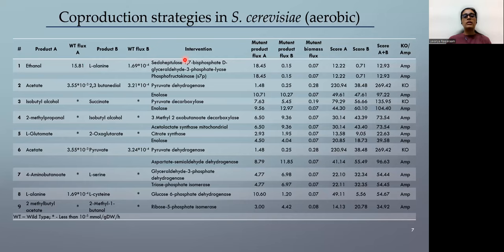So this is the table summarizing the co-production strategies we have obtained in S. cerevisiae in aerobic conditions. So here you can see that the various commercially valuable products like ethanol, isobutanol, succinate and various amino acids can be co-produced. These are the wild type fluxes and they are pretty low. And when we amplify or knockout these particular reactions, we see a good increase in both the products and it is coupled by a decrease in biomass flux.